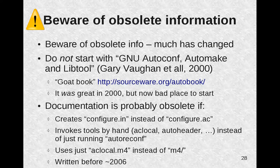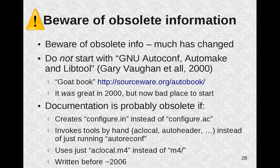Documentation in general is probably obsolete about Autoconf if it talks about creating a configure.in instead of configure.ac, if it talks about invoking tools by hand like aclocal or autoheader instead of just running autoreconf, if it uses the aclocal.m4 file directly instead of the m4 directory, or if it's documentation written before about 2006. There's a whole lot of this obsolete information, and while it might be useful once you know more, it's a terrible place to start.